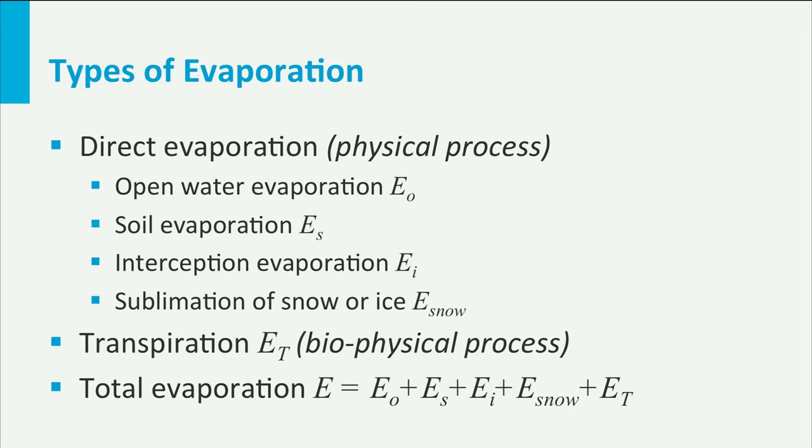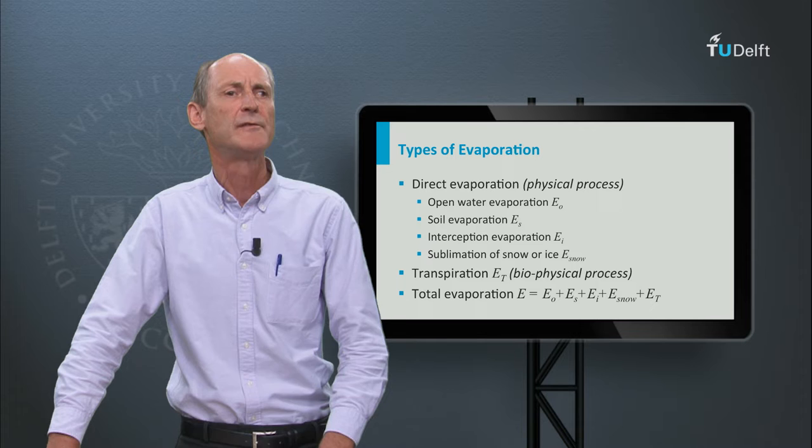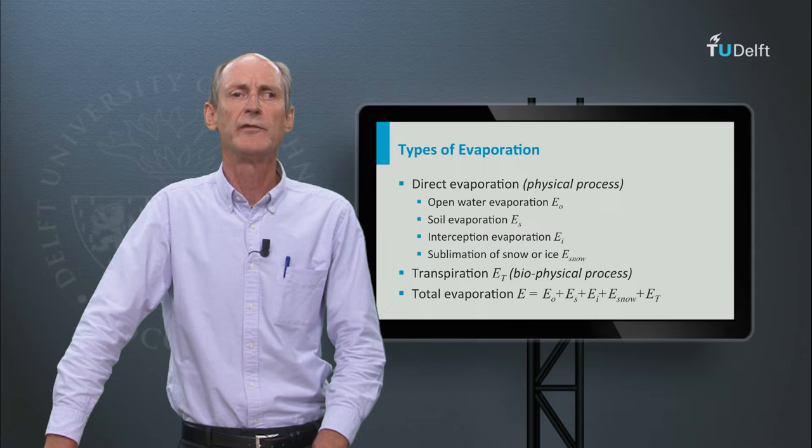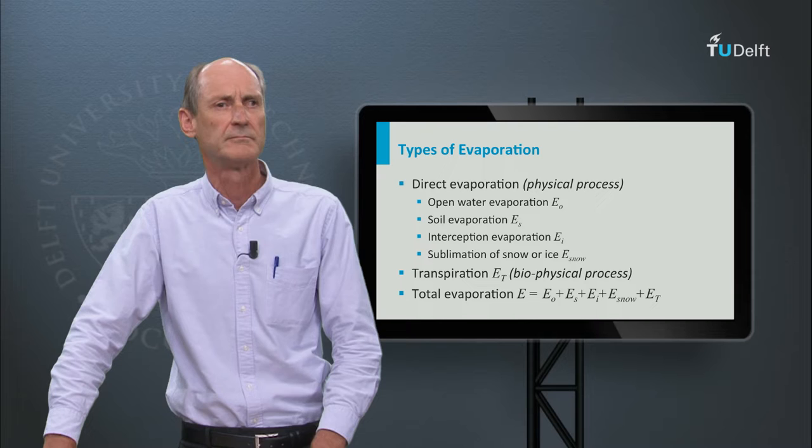The total evaporation from the land surface is the sum of all these processes. The first four are purely physical processes that transform moisture from the solid or liquid phase into the gas phase. Transpiration of moisture is a by-product of photosynthesis in vegetation.